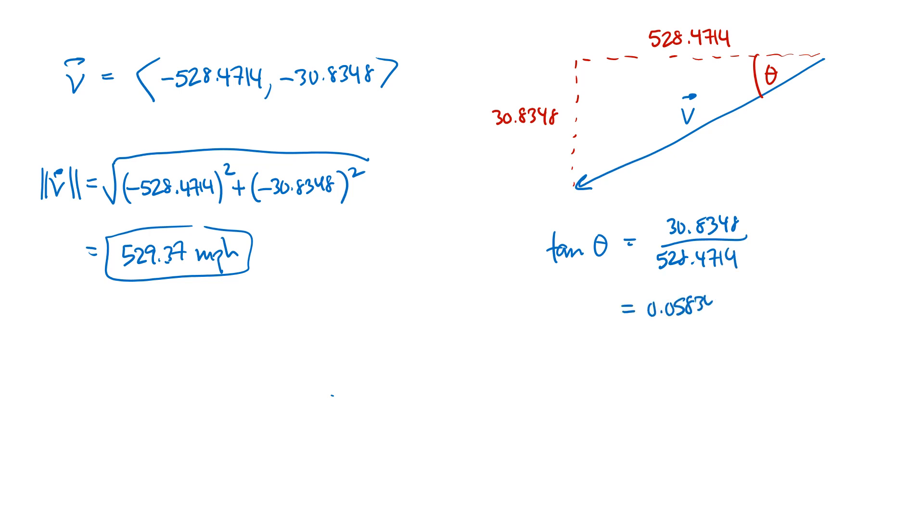That's the tangent of my angle. So my angle itself is going to be the inverse tan of that number, 0.058347, which when we convert to degrees gives us approximately 3.34 degrees. So that angle of my triangle is 3.34 degrees.